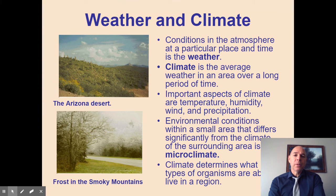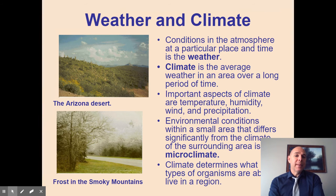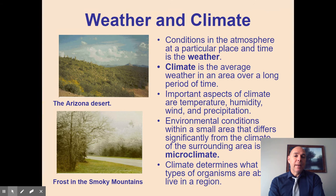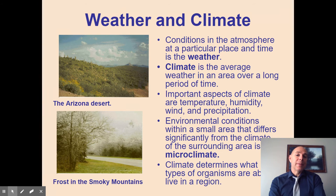In some ways, a mountain range shows this too — weather conditions at the bottom differ from the top. The pictures in this presentation show the Arizona desert and the Smoky Mountains, which are roughly the same elevation above sea level but have very different climates. One is very dry while the other has a lot of humidity throughout the year.